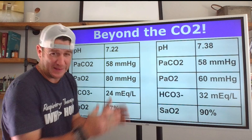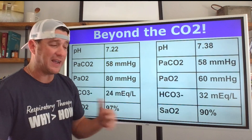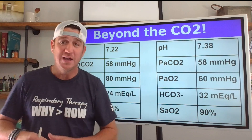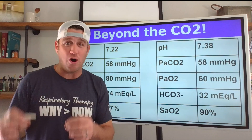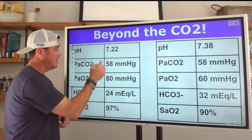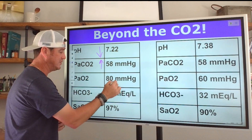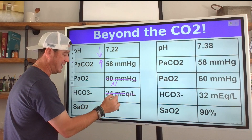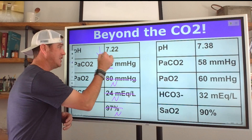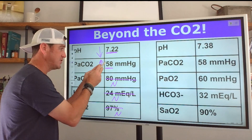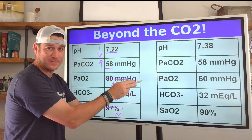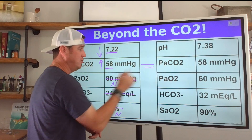Now we have to look beyond CO2. You might think: if I have a high CO2, I need to ventilate. Not always. Here we have a high CO2 causing a decreased pH, normal PaO2, normal bicarb, normal saturation. That CO2 is causing the acidotic pH, so this person needs mechanical ventilation. But how is that different from a patient who also has a CO2 of 58, but a pH of 7.38? Both have the same CO2 — one is acidotic, one is normal.